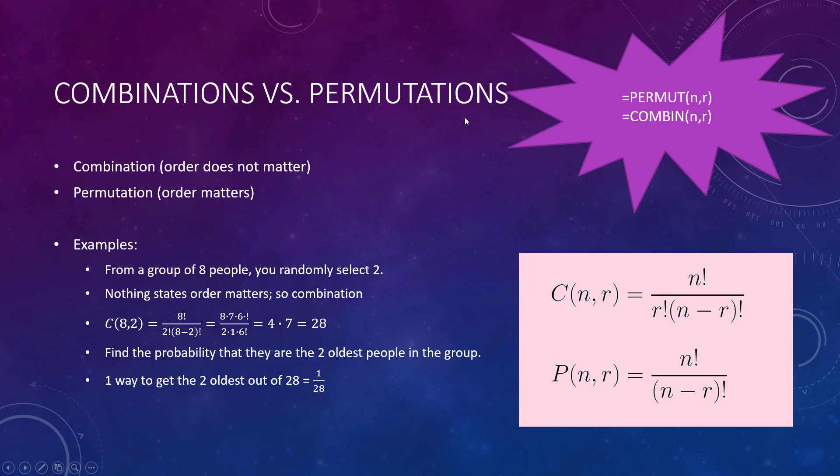Factorials are used in the formulas for combination and permutations. Combination is when order does not matter. I'm going to pick five of you to come to my party this weekend - the first person picked doesn't mean they're my favorite, I just pick five of you. If I say I'm going to pick two of you and the first one picked is the president, the second one's the vice president, then order matters.